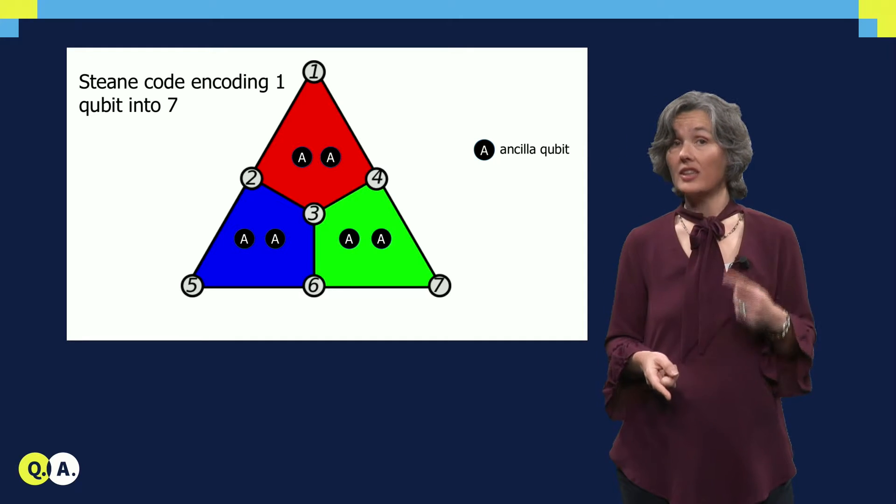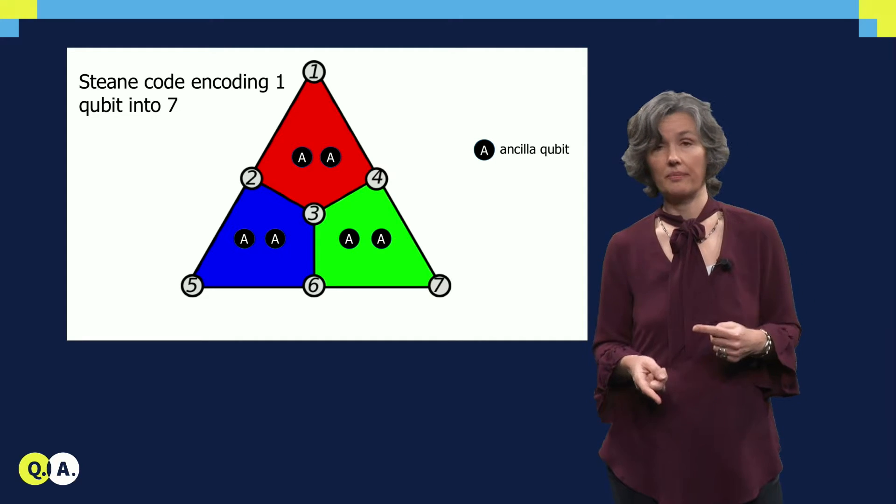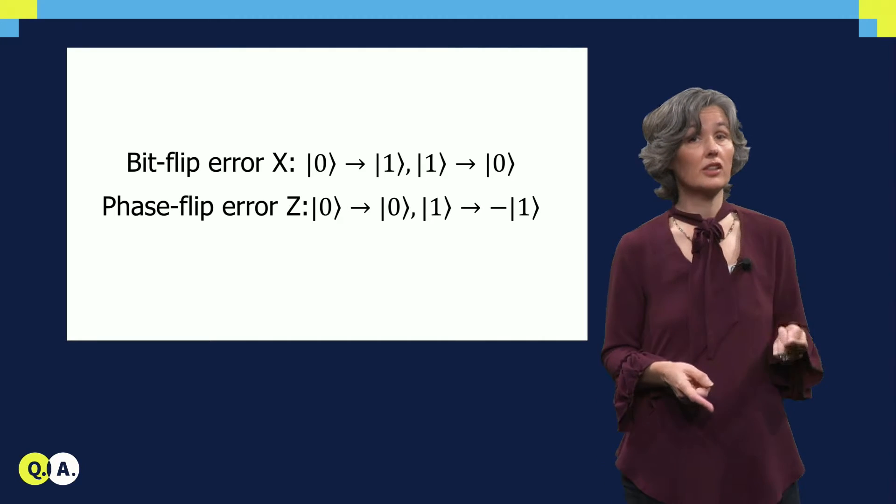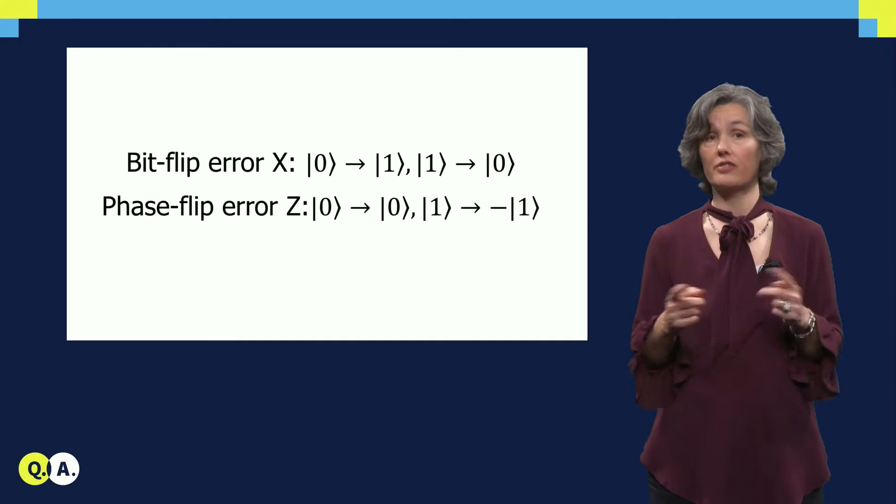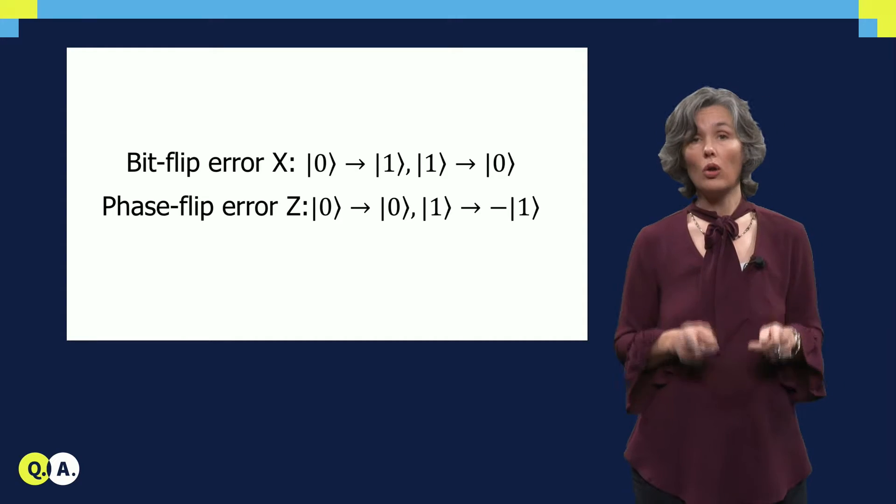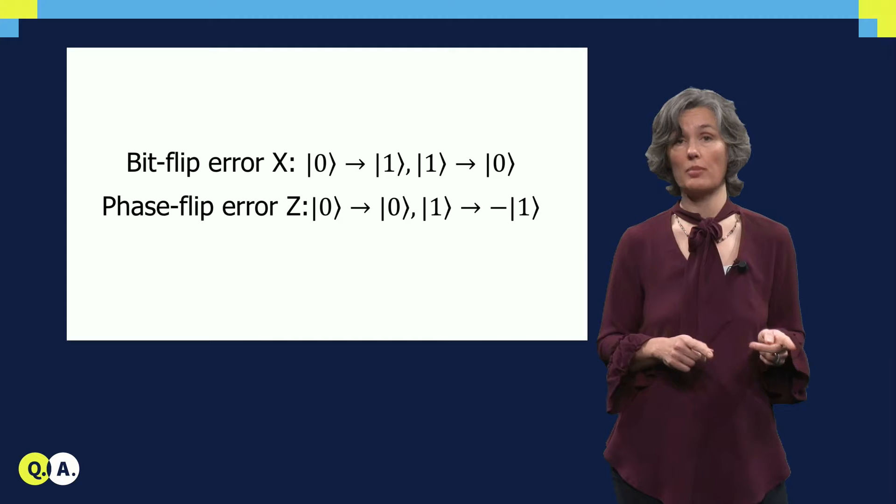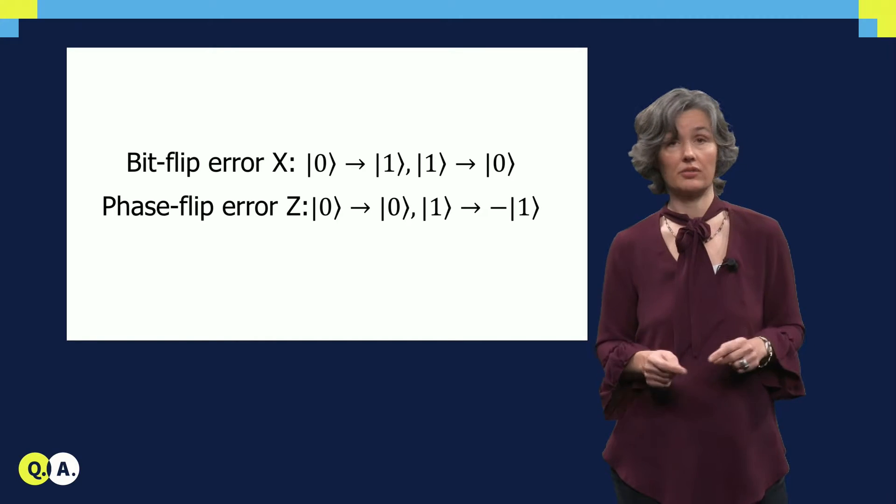But wait, we can't just correct any old error. First of all, a qubit can undergo two types of elementary error. There is bit flip and there are phase flip errors. All other errors on a single qubit are linear combinations and or products of these errors.